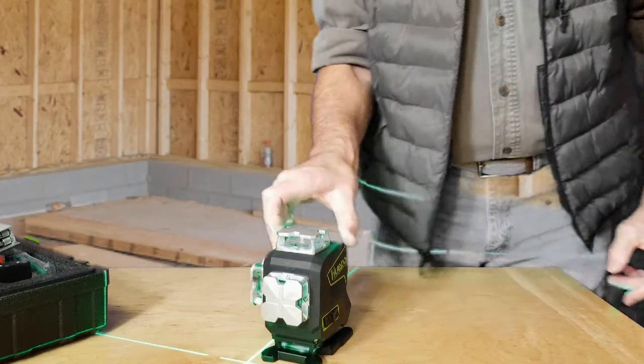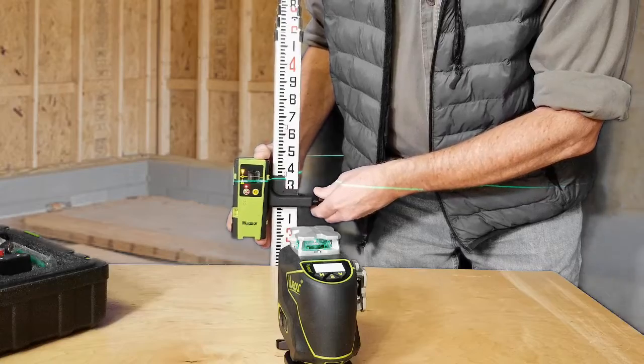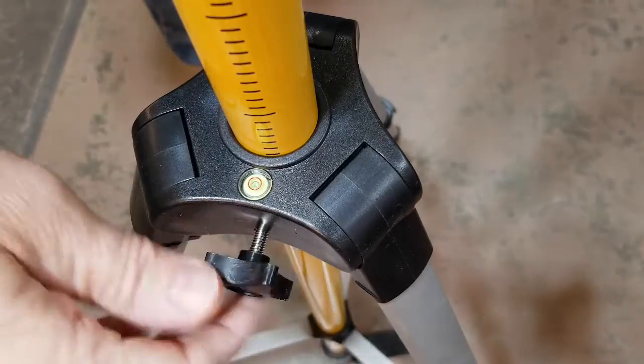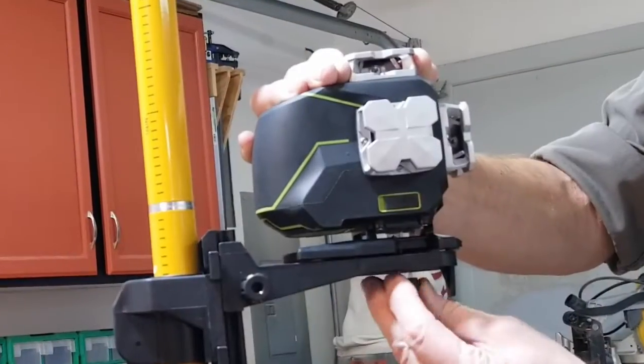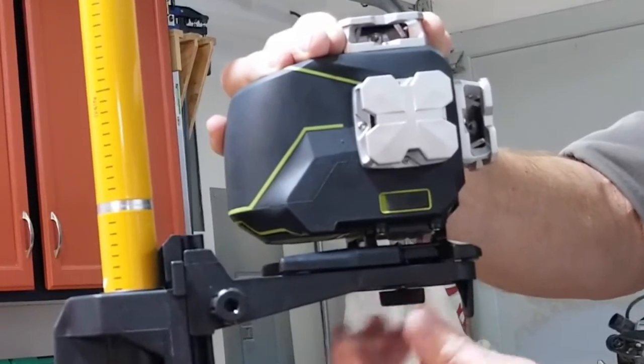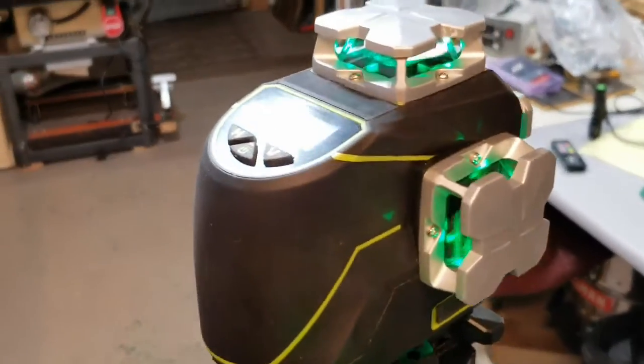It is not that difficult to check calibration on a self-leveling laser level, but it's very helpful if you first understand why you should check it, not only when you first get it, but periodically to make sure it stays within manufacturer specifications.